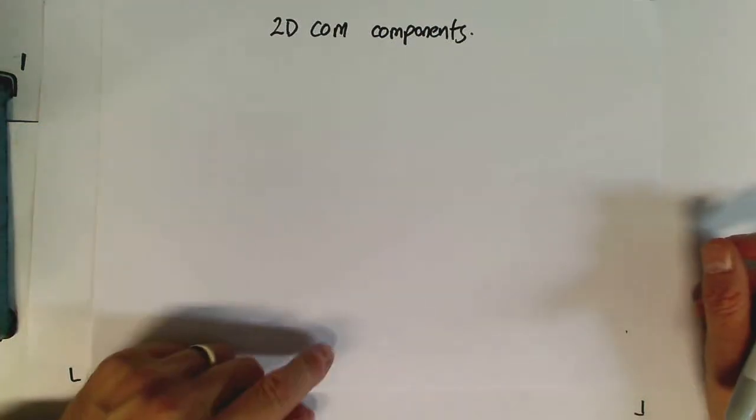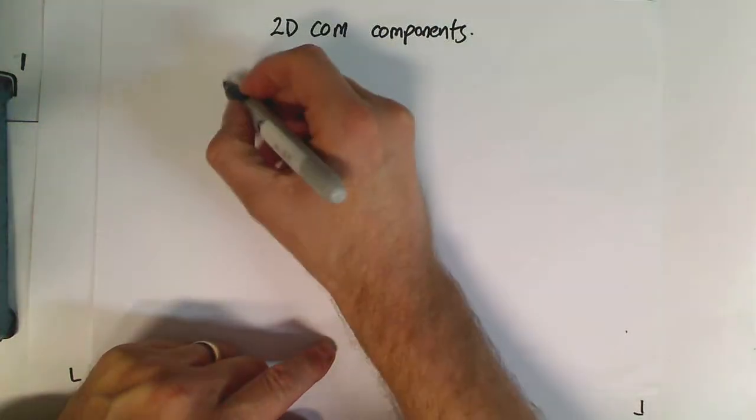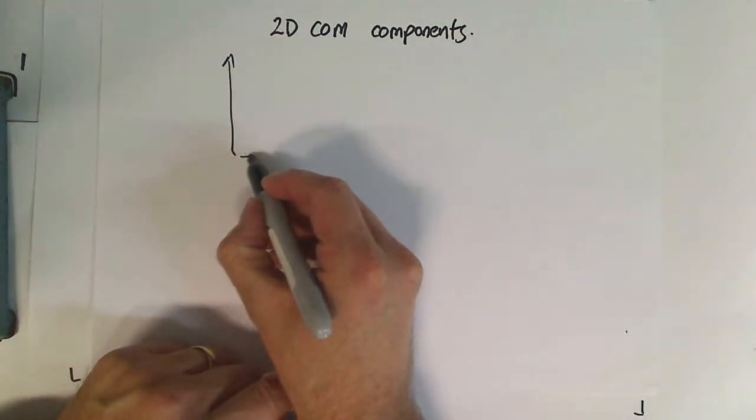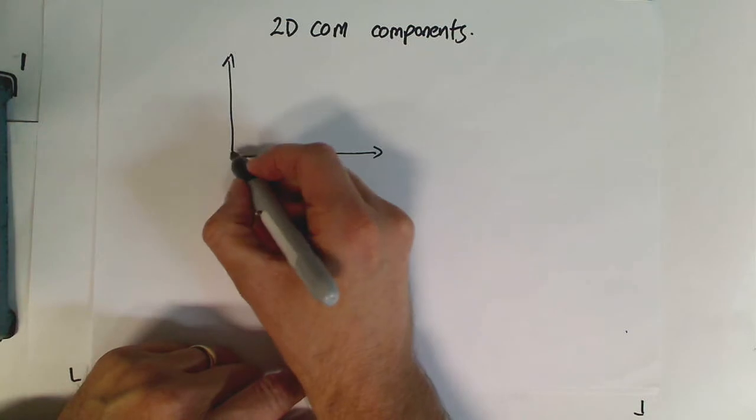Okay, what I'm going to show you how to do with this one is how to work out the center of mass when you've got more than one object, and we're working in two dimensions.